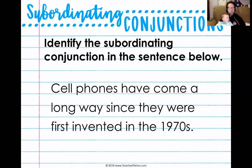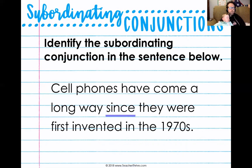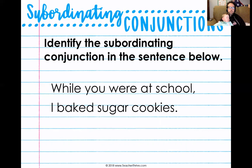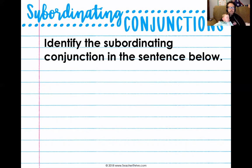Were is also a verb. I feel like it's missing something — since they were first invented — which tells me that the word since is my subordinating conjunction. What about: while you were at school, I baked sugar cookies? In this sentence, the dependent clause actually comes at the beginning of the sentence — while you were at school. So our subordinating conjunction is while, and it's telling us time.